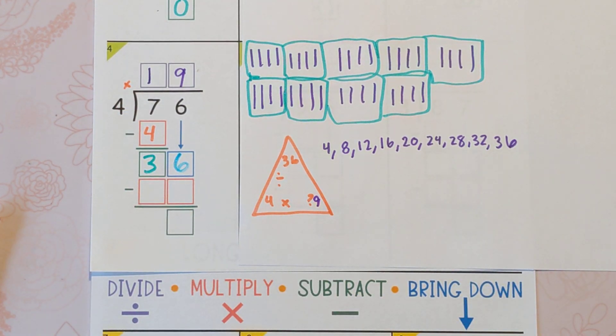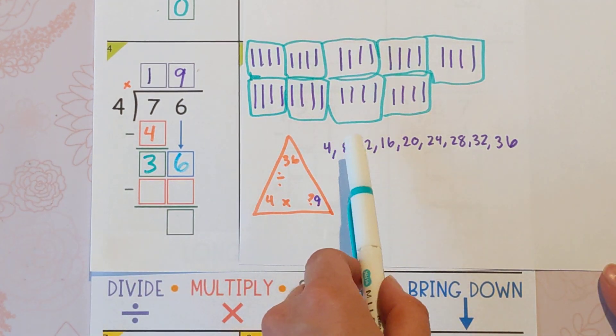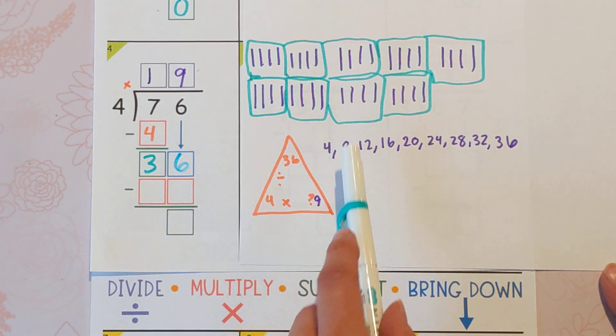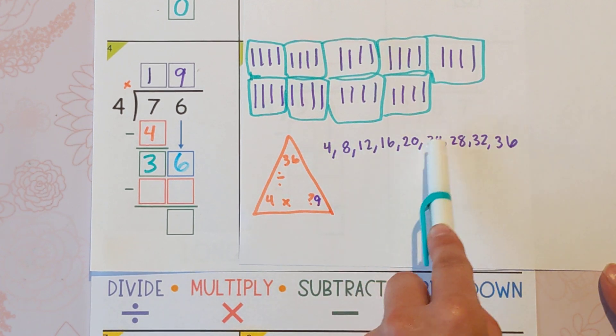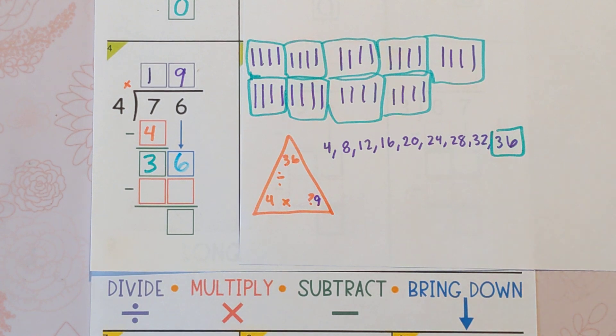My favorite way is to skip count because it's going to be really easy later on. So if you skip count your fours and you hit 36: one, two, three, four, five, six, seven, eight, nine.